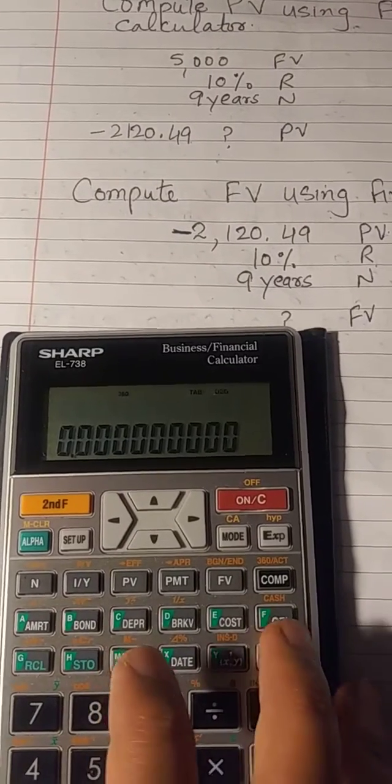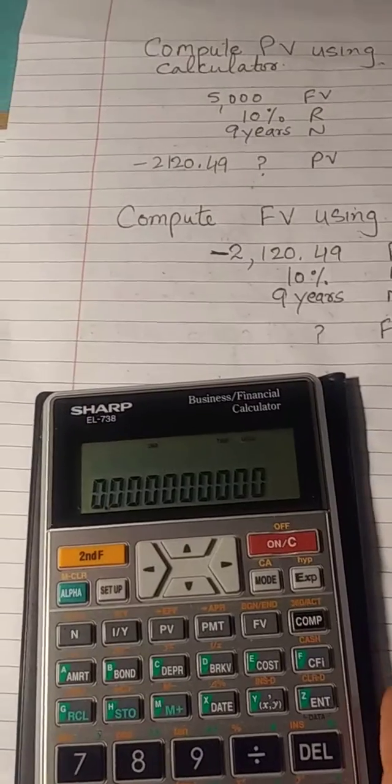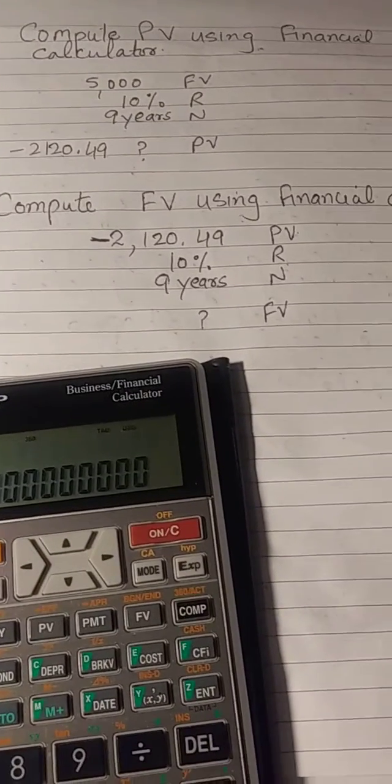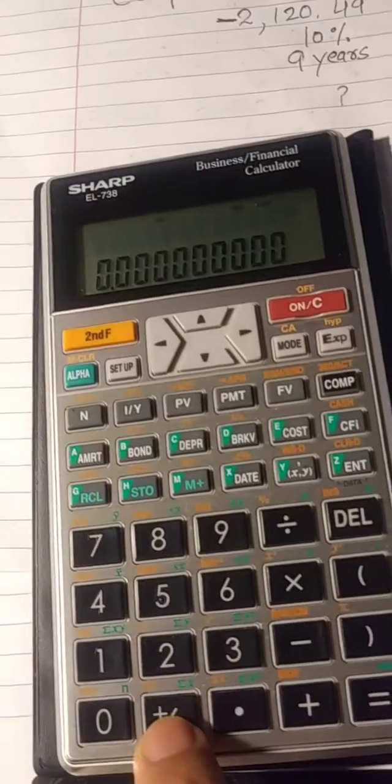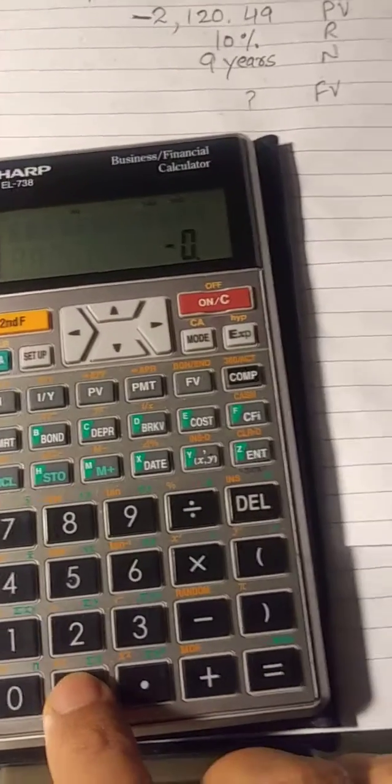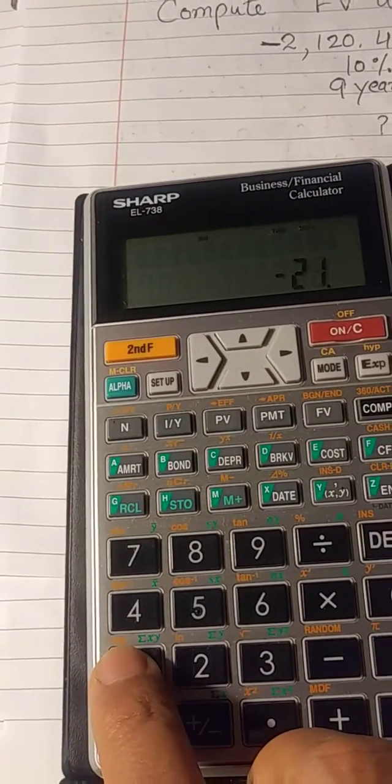Present value is in a negative, so you can have a look here: negative two thousand one hundred, then twenty point four nine. So this one is our present value.